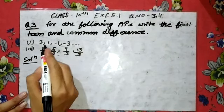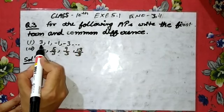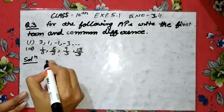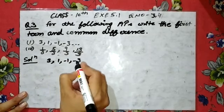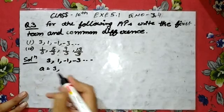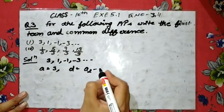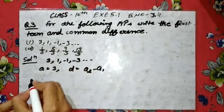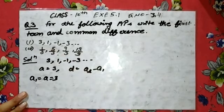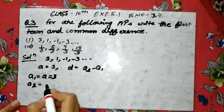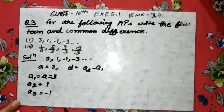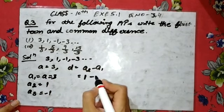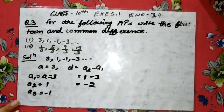You have this term given. The first term A1 is 3, which is written in the beginning. So you will write 3, 1, minus 1, minus 3 and so on. A is equal to 3. And what is the value of D? A2 minus A1. So you have A2 minus A1. How much is A2? A1 is equal to 3, then A2 is equal to 1, A3 is equal to minus 1.